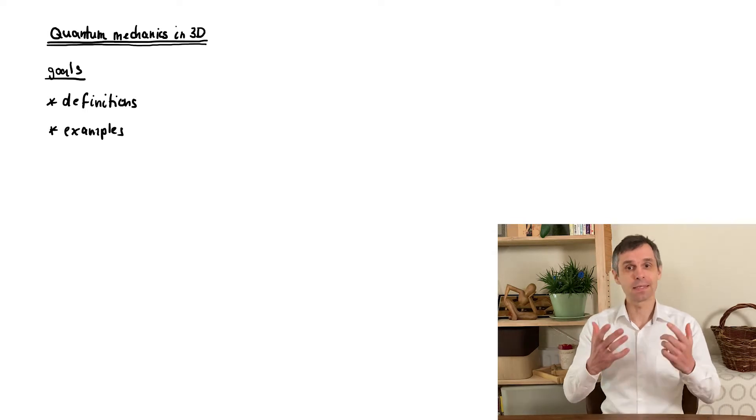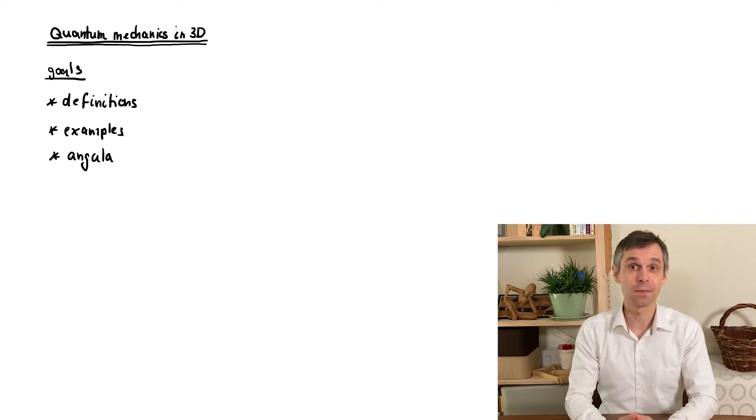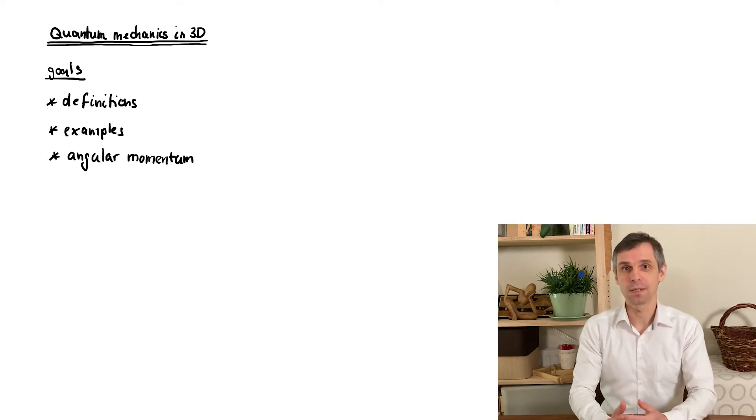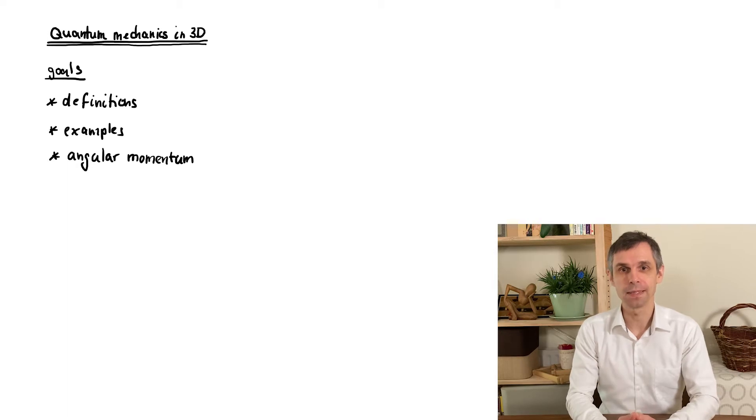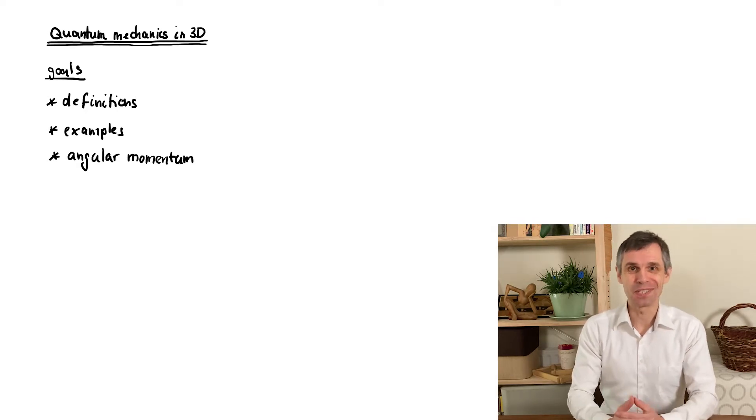Then we have a look at some examples that are a direct generalization of our one-dimensional models. Next we discuss angular momentum as a key observable of three-dimensional quantum systems. Partially this is in preparation of the hydrogen atom, as it will simplify the solution significantly, both conceptually as well as mathematically, when we compare this to the special functions that we would otherwise be required to work with.